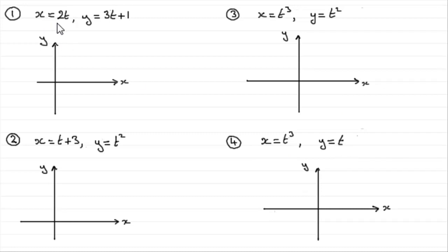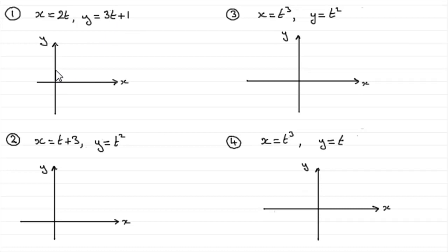When you're going to sketch any parametric equation, start with a central value of t equals zero. In this example where x equals 2t and y equals 3t plus 1, when t is zero, x is zero and y comes out to 1. So the first point when t is zero will be (0, 1). Let's imagine it's that point there and just mark a 1 in there.